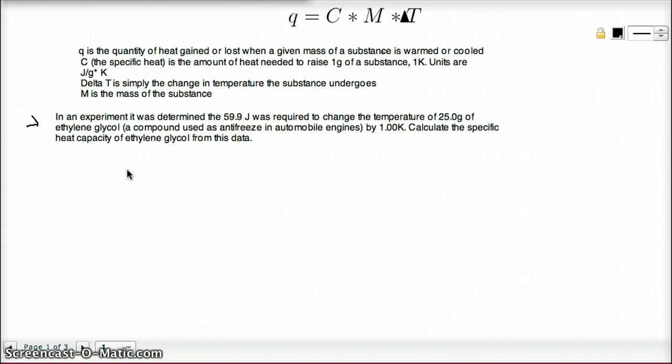In an experiment, it was determined that 59.9 joules was required to change the temperature of 25 grams of ethylene glycol, a compound used as antifreeze in automobile engines, by 1 kelvin. Calculate the specific heat capacity of ethylene glycol from this data.